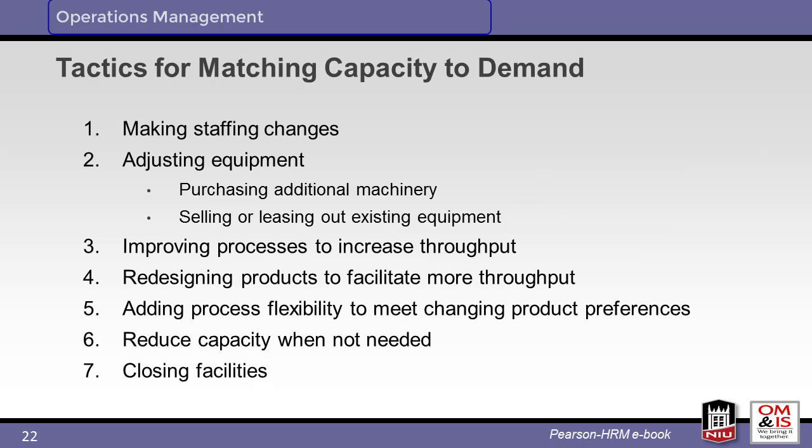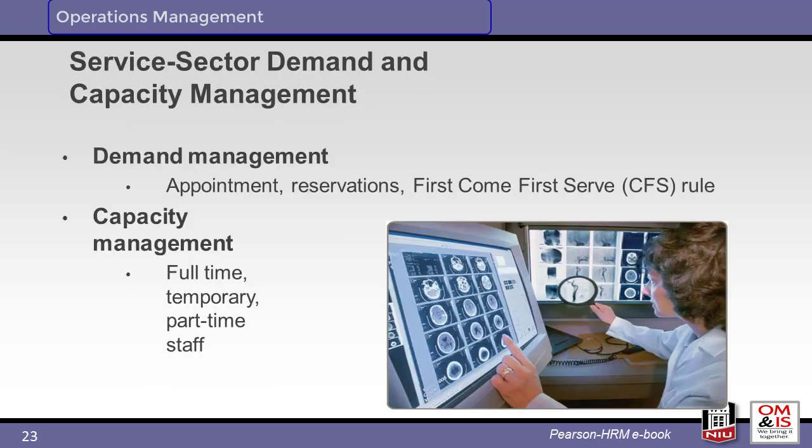Additional tactics are available for matching capacity to demand. Some actions support increases in capacity while others reduce capacity. Often the best approach is to increase flexibility to more readily adapt in either case. The service sector must also deal with mismatches between capacity and demand. Demand management may include appointments, reservations, and serving customers on a first-come, first-served basis. Capacity may also be addressed through the use of temporary staff and variable shifts.